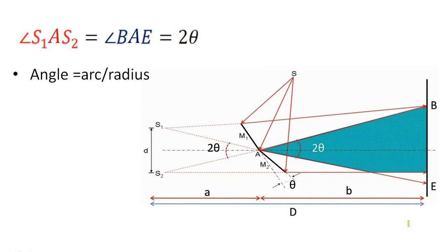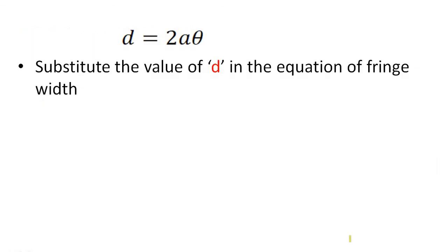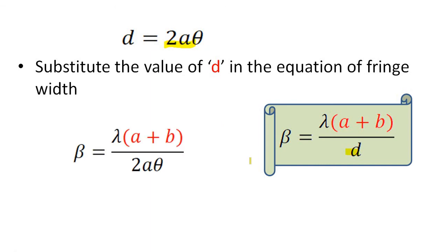Using the equation: angle equals arc divided by radius, we can write 2 theta equals D divided by a, or equivalently 2 theta equals S1S2 divided by a, giving us D equals 2a*theta. Substituting this value of D into the fringe width equation beta equals lambda times (a plus b) divided by D, we replace D with 2a*theta to get: beta equals lambda times (a plus b) divided by 2a*theta.